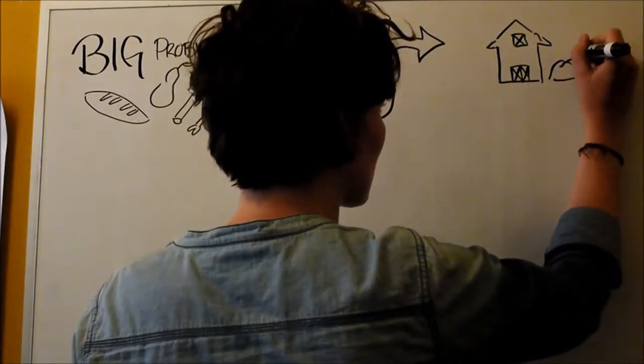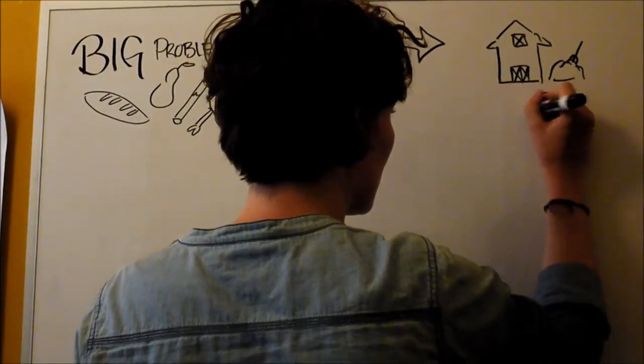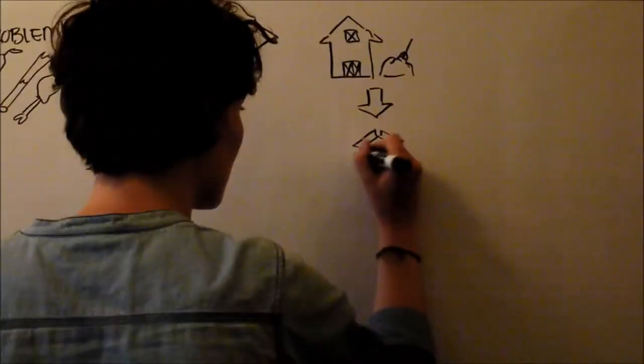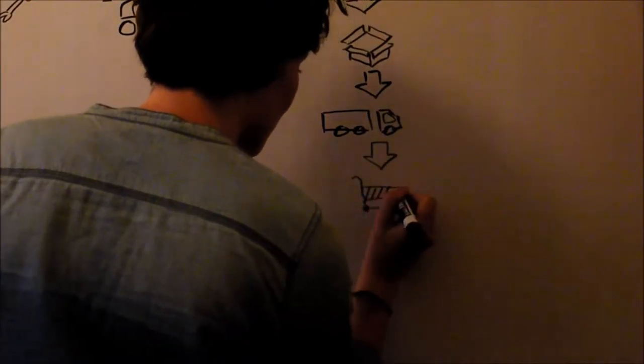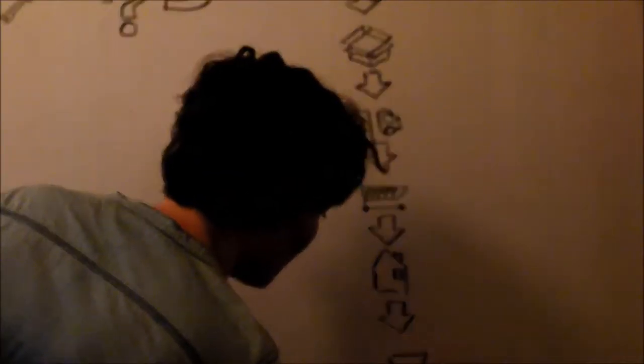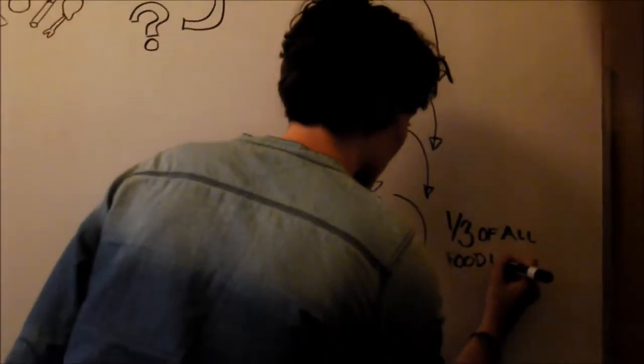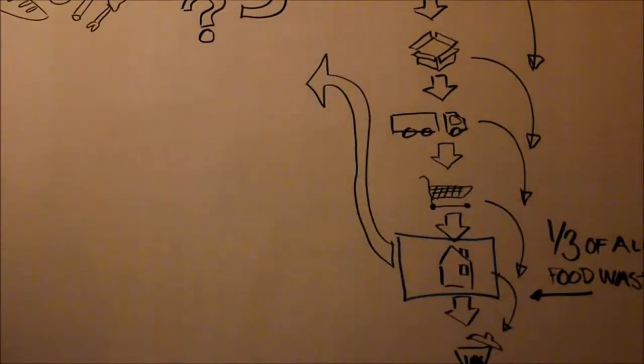We started by looking at the entire food system in Denmark, from agriculture to waste management. We found that all through the supply chain food is being wasted. The biggest amount, though, is wasted in private households that stand for over one-third of all food waste in Denmark. So we decided to look closer at the consumer level.